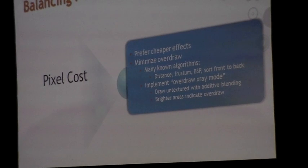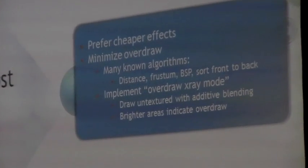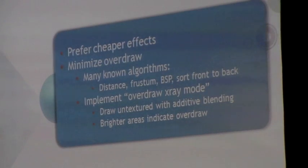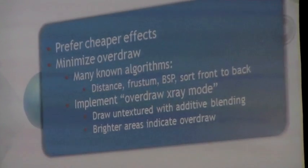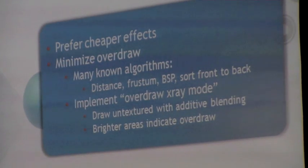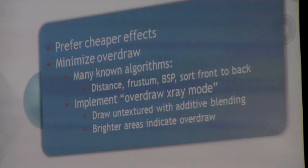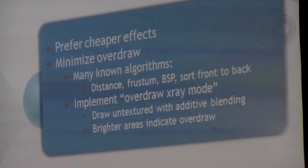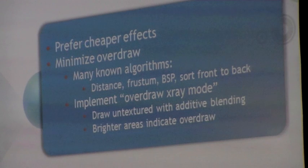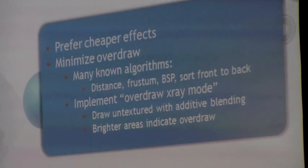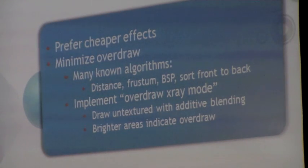Pixel cost is important to understand. The two things that determine it are: what effect are you using, and how many times do you draw each pixel? The built-in effects have many knobs — be careful turning on pixel lighting, using more bones in a skinned character, more weights per vertex, or enabling fog, as all of these increase pixel cost. If you can get great results from shaders at lower pixel cost, that's always better. Most games have a sky, then buildings, then characters layered in front — you can end up drawing the same pixel dozens or even hundreds of times, which will send your costs through the roof.